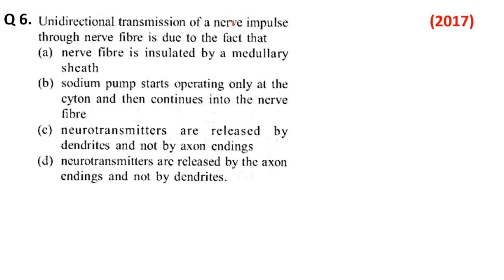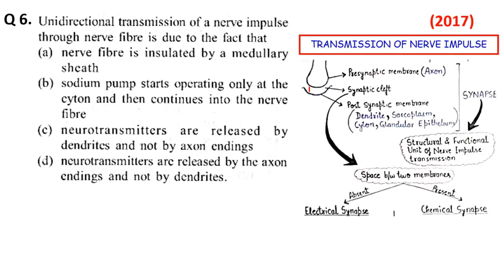Explanation देखते हैं — यह एक axon का terminal end है, pre-synaptic membrane, और यहाँ पर neurotransmitter इकट्ठे हो जाते हैं। वो neurotransmitter synaptic cleft में move करते हैं। यह post-synaptic membrane है — dendrites हो सकता है, sarcoplasm हो सकता है, cytone, glandular epithelium कुछ भी हो सकता है। तो हमेशा axon के through नए dendrites पर आएगा — हमेशा unidirectional होगा। Dendrites पर कोई ऐसा bulb नहीं होता जहाँ neurotransmitter इकट्ठे हों जो impulse को आगे move करें। तो हमेशा impulse dendrites से axon, और axon से नए dendrites — इस तरह आगे move करता है।